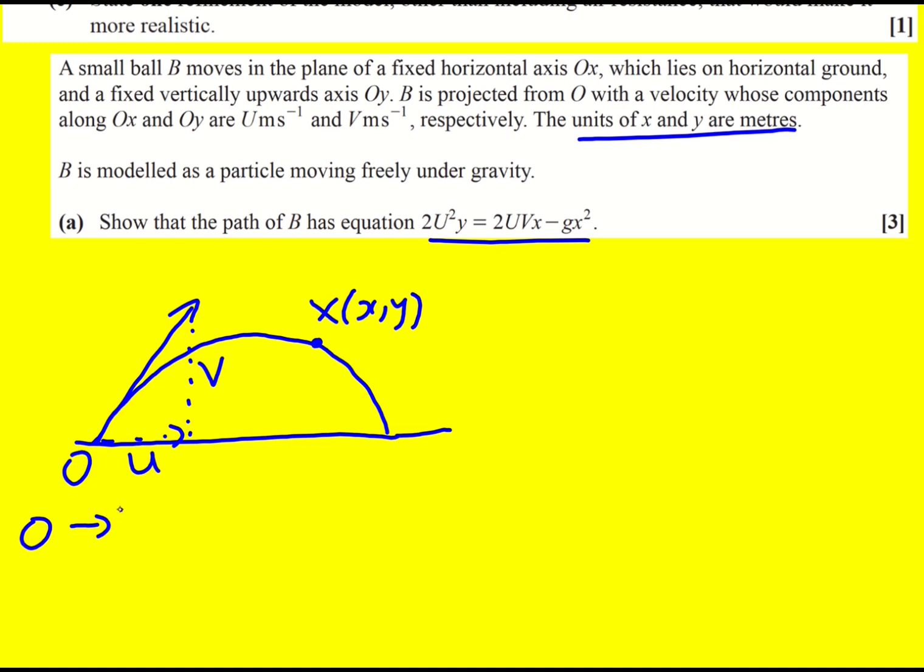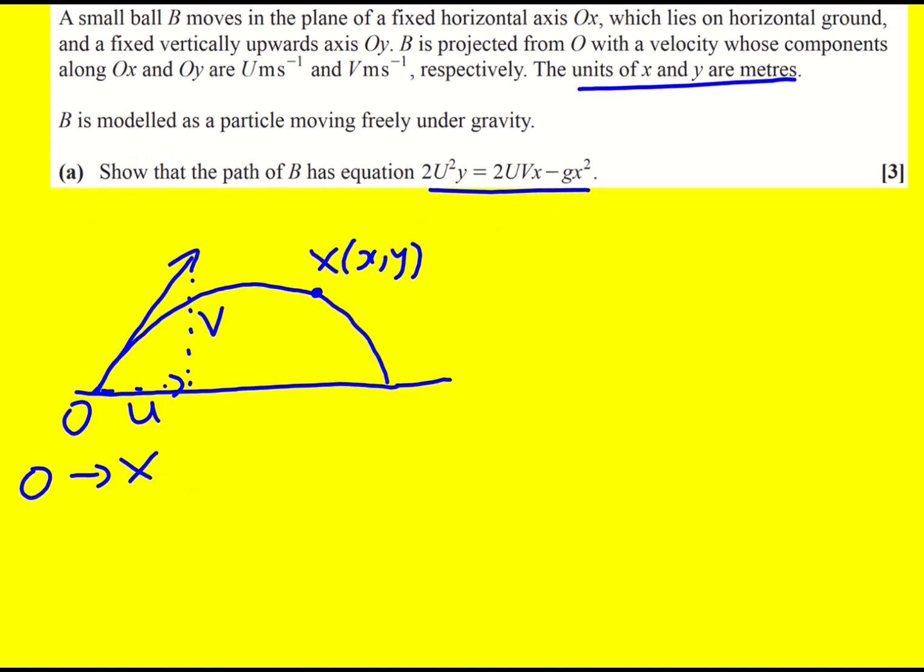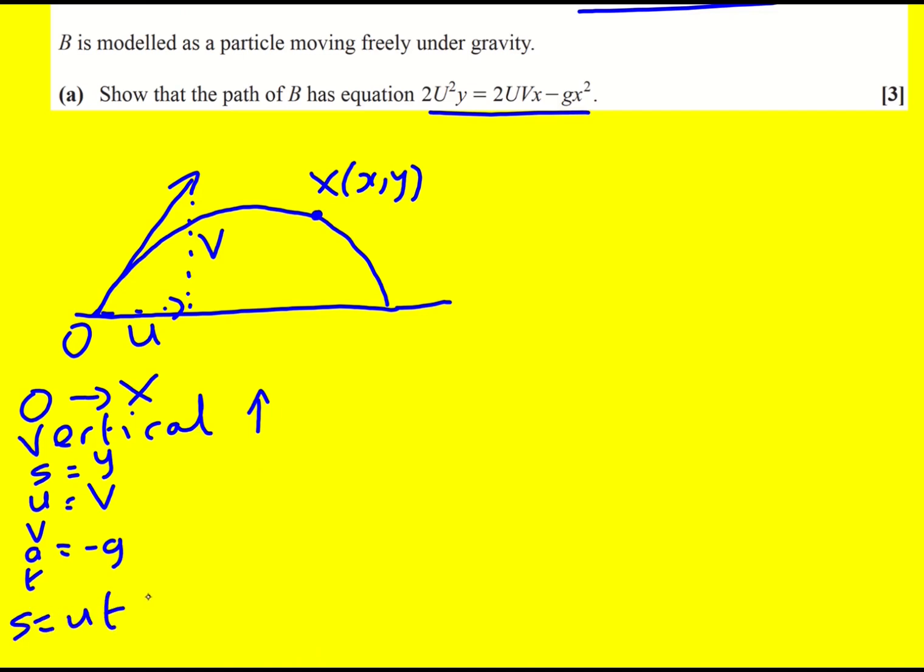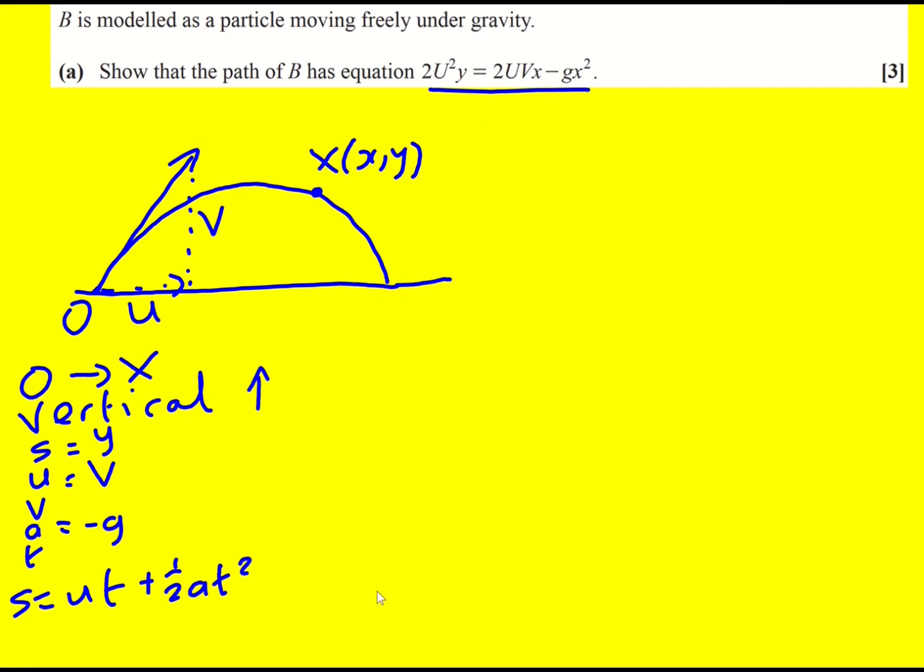Let's take a look then at O to x. So if I first of all look at the vertical component and I'll apply up as positive, then writing SUVAT down I'm going to get y for s, my u is going to be capital V, my a is going to be minus g because gravity is acting down, and then I can write an equation down involving t as well because that is going to be the link to the horizontal component. So s equals ut plus half a t squared, that's the one that doesn't involve v, therefore y is equal to capital V times t minus a half g t squared.